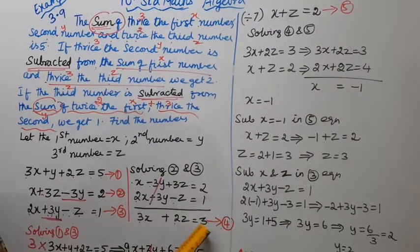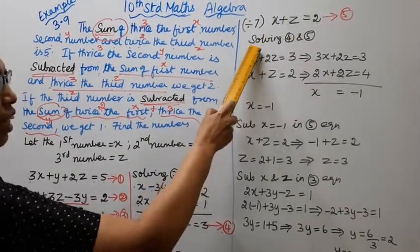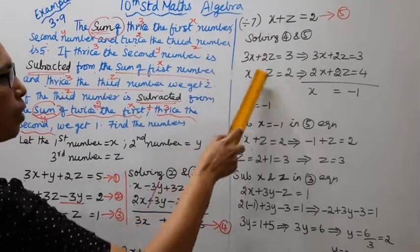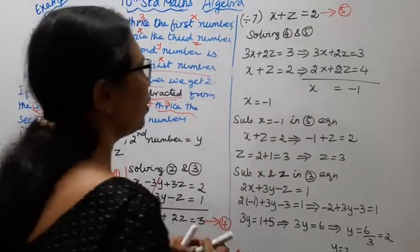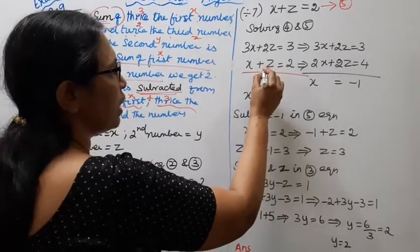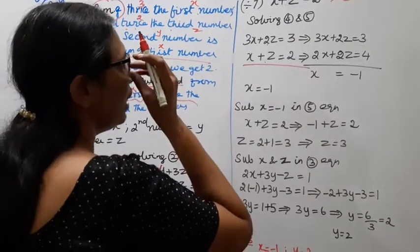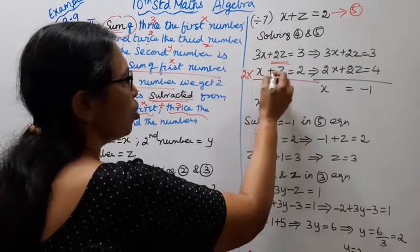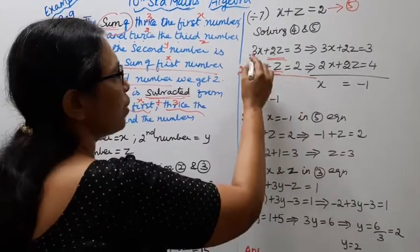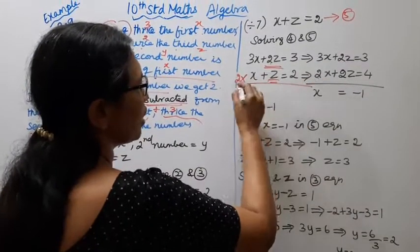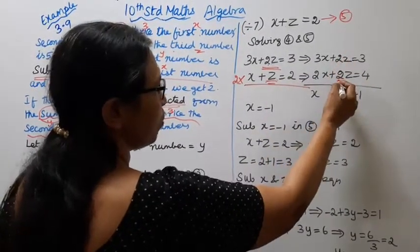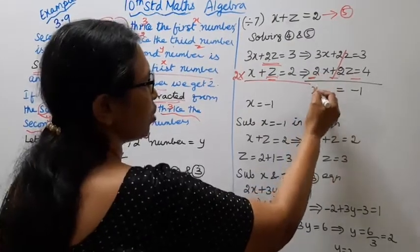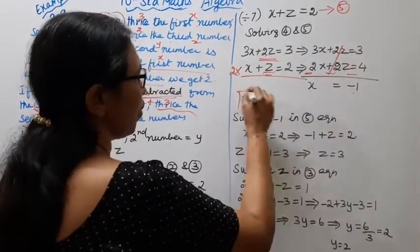Now solving equations 4 and 5: equation 4 is 3x + 2z = 3, equation 5 is x + z = 2. Multiply equation 5 by 2: 2x + 2z = 4. Subtract: 3x - 2x = 1x, plus 2z minus 2z cancels, and 3 - 4 = -1. Therefore x = -1.